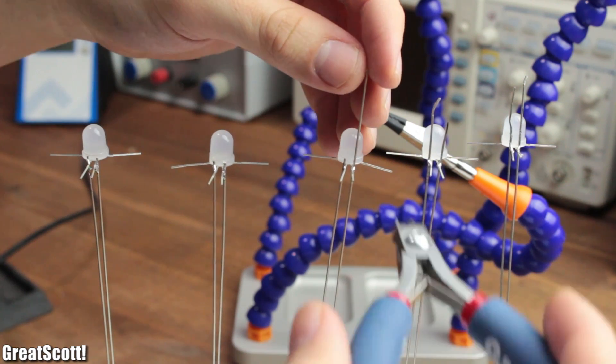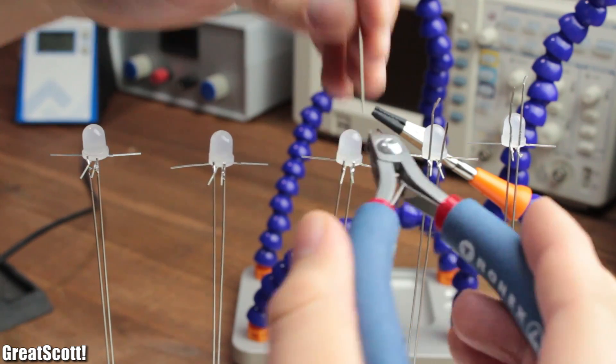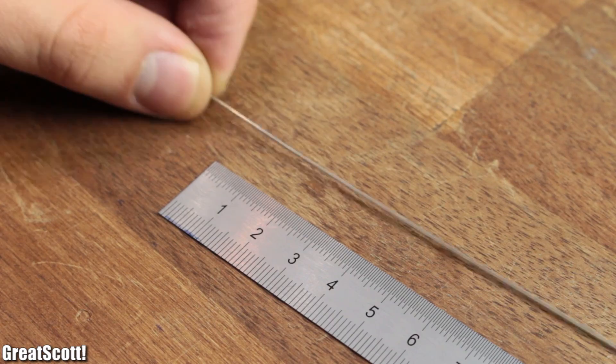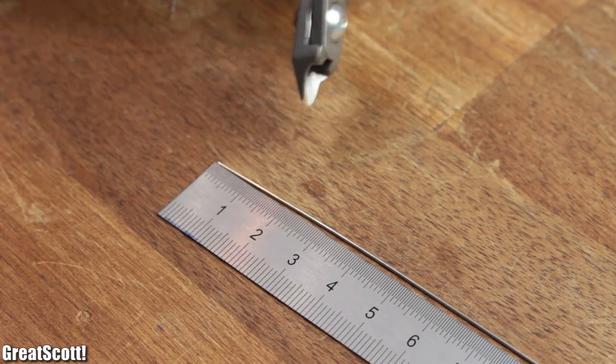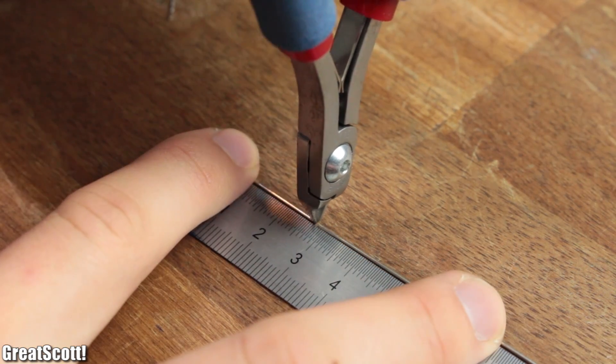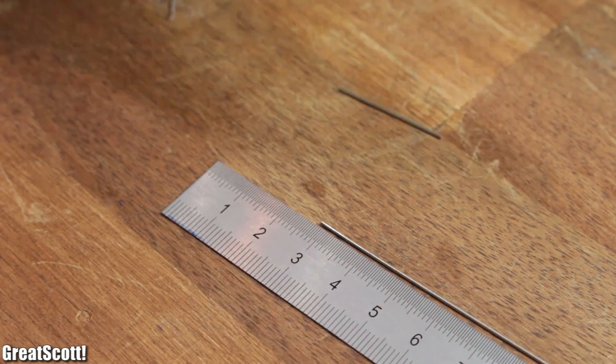And after I used my diagonal cutter to remove the unnecessary axis of the wires and LEDs, I created small 2.5 cm pieces of the silvered copper wire, which I will show you how to use in the next part.